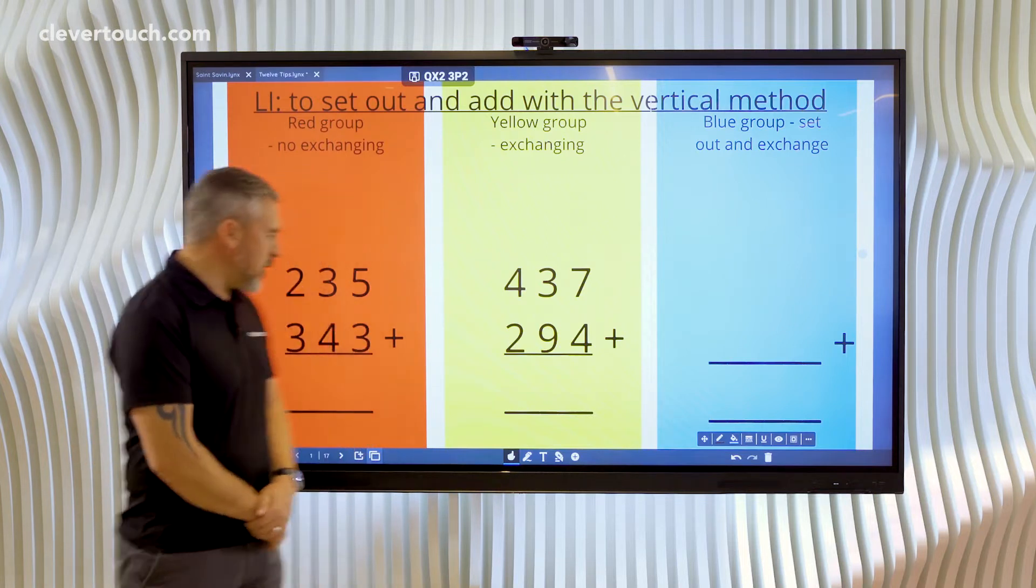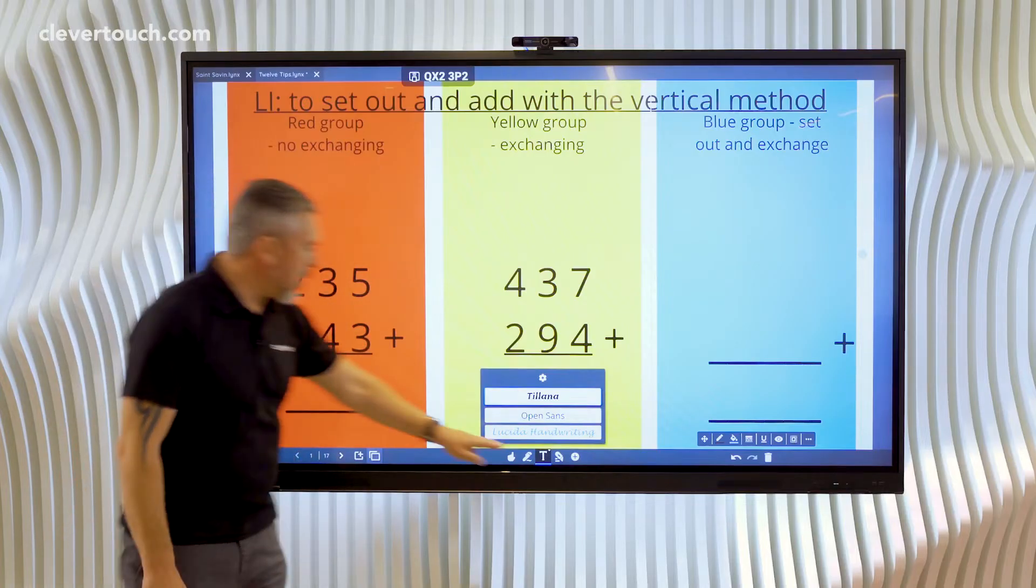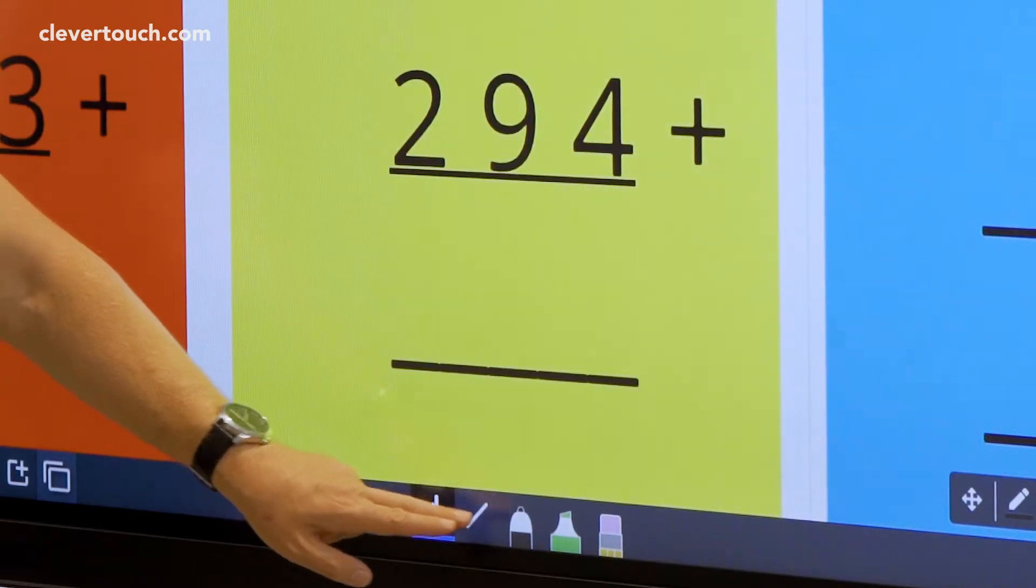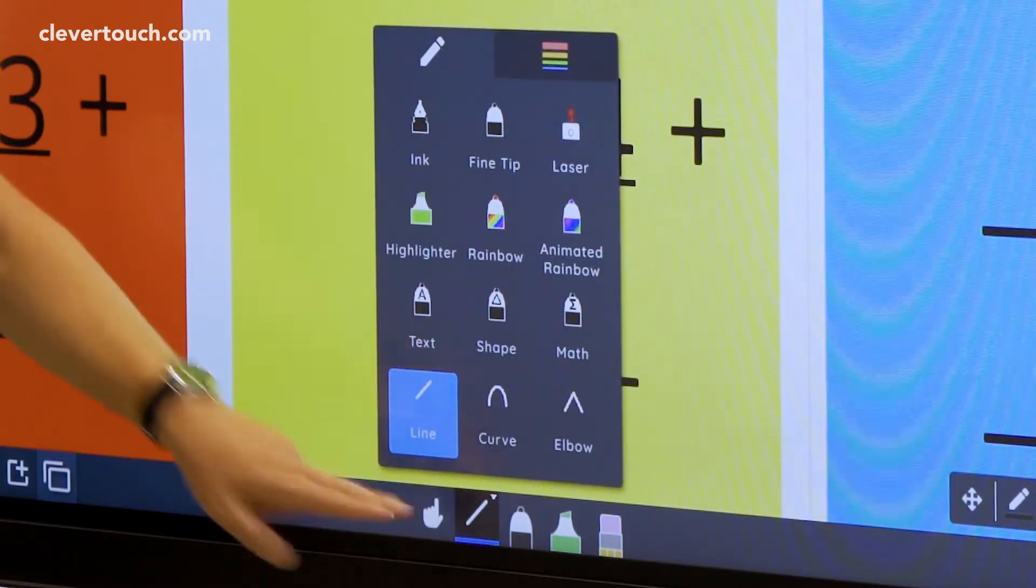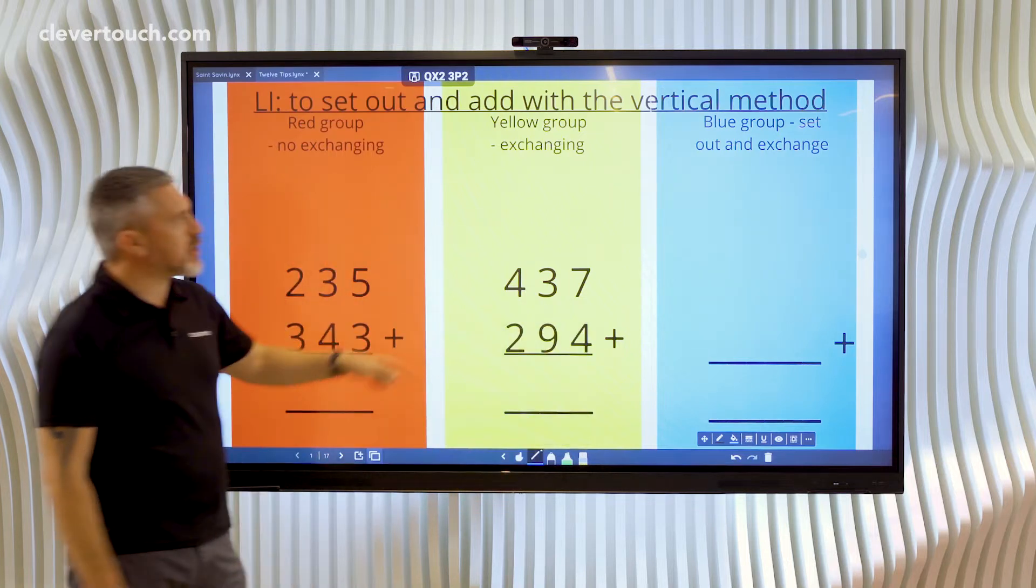So I've been using text boxes and my line pen which I find here. There it is there. And I've been creating some addition calculations on screen.